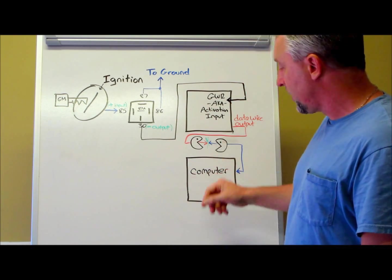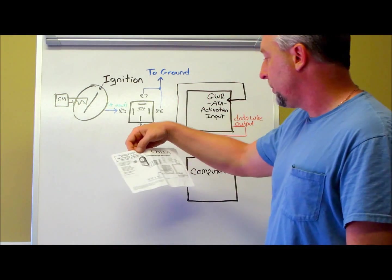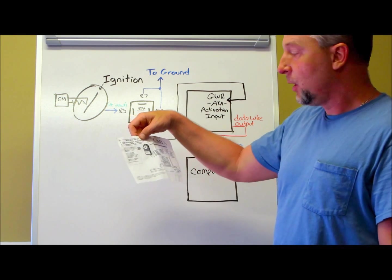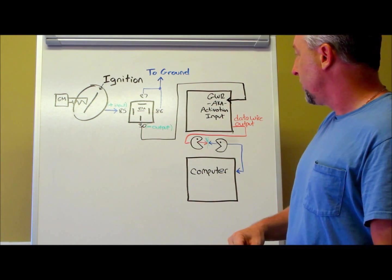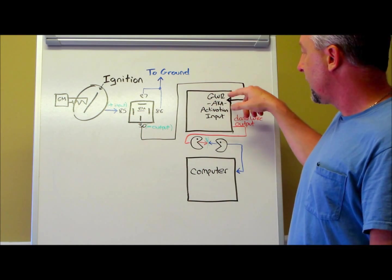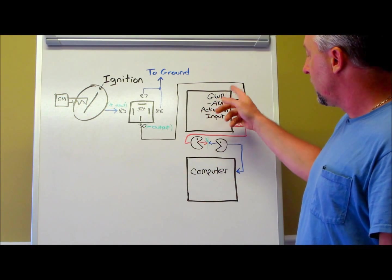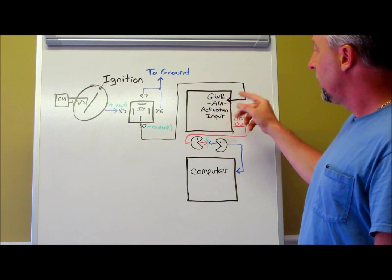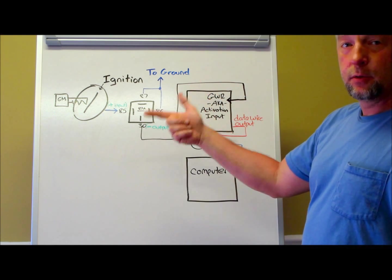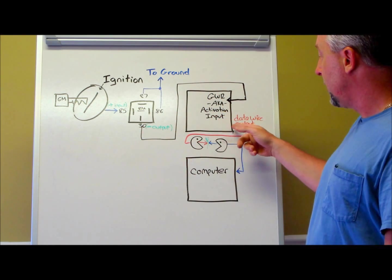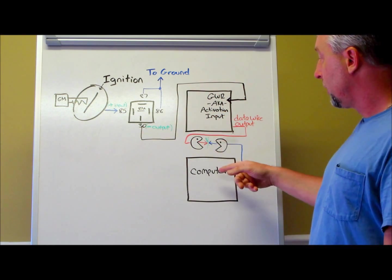Now, on here in the instructions, it's going to call it either a GWR, which stands for ground when running, or an activation input wire. It's looking for a ground signal to activate the bypass. This one only requires four wires. One is your ground when running or negative activation input wire, power and ignition to power the module, and it has a data output wire, which goes to the car's computer.